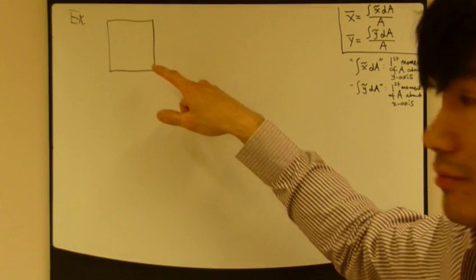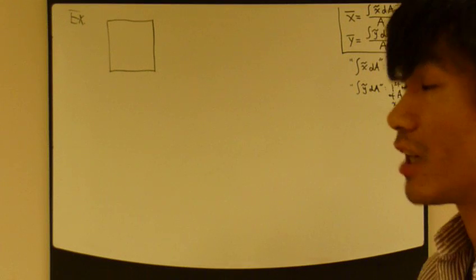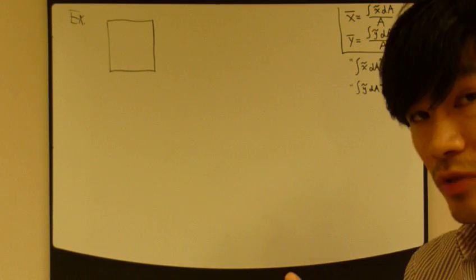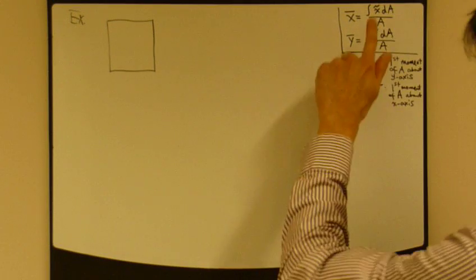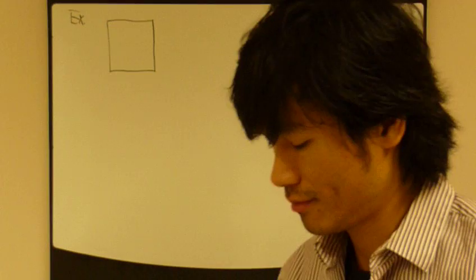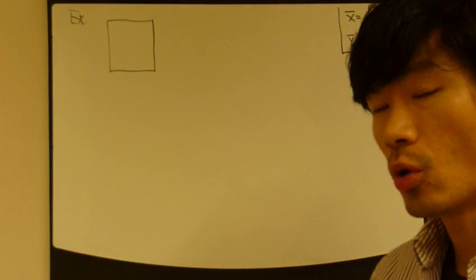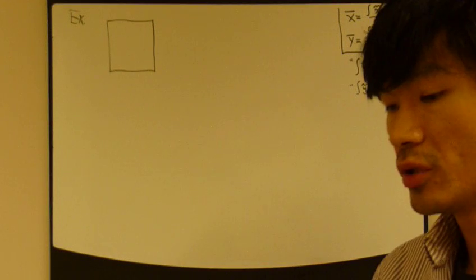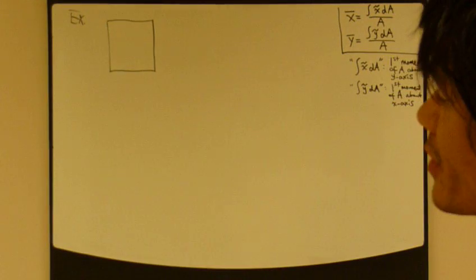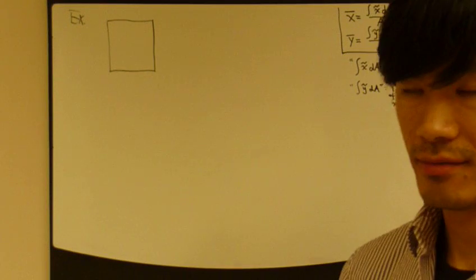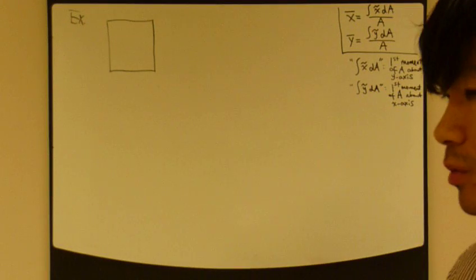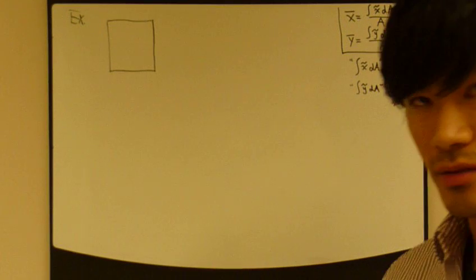Let's look at a simple example — probably the simplest I can give: a rectangle. From experience, you know exactly where the centroid is — right in the middle — but let's prove it using these equations. The first thing you want to do before writing down any equation is define your coordinate system: where do you want to put the origin? Your final answers x-bar and y-bar will be unique to where you define that coordinate system.